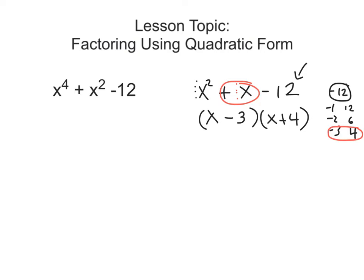But we need to come back and think about how we need x to the 4th and x squared. What if I put a squared on each x here? If I FOIL this, I would get x squared times x squared, which is x to the 4th. Then outside gives 4x squared, and inside gives negative 3x squared. And 4x squared plus negative 3x squared is 1x squared. Multiplying the last terms gives negative 12, which we have here.